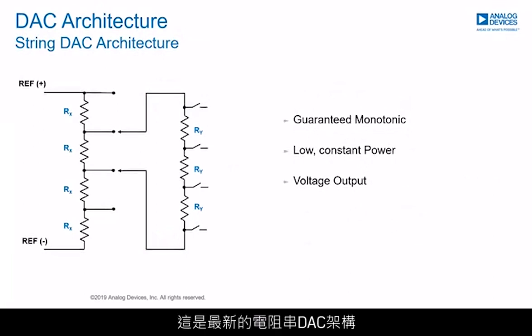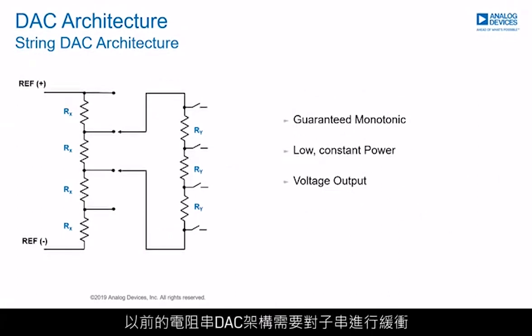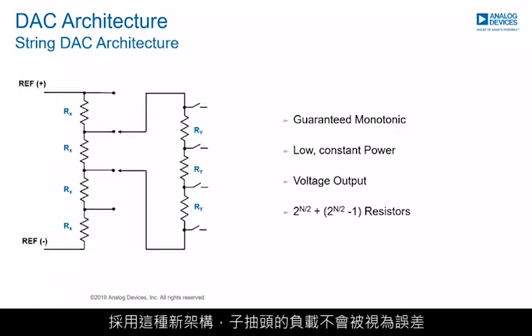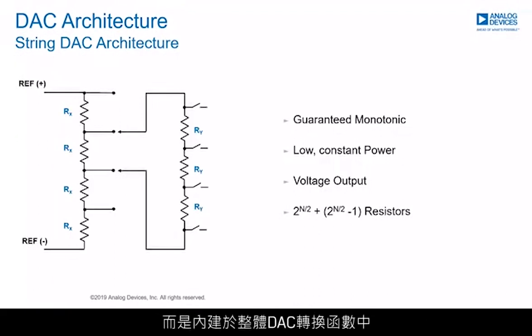This is the newest string DAC architecture, and it overcomes the shortcomings of previous string DAC architectures. Previous string DAC architectures require the substring to be either buffered or of much higher impedance to overcome the loading effects of the substring on the main string. With this new architecture, the loading of the sub-DAC is not treated as an error, but is built into the overall DAC transfer function.